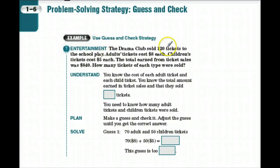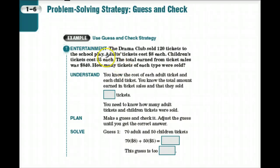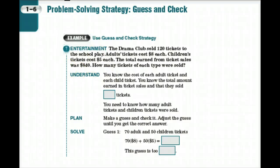The problem says to use the guess and check strategy. The drama club sold 120 tickets to the school play. Adult tickets cost $8 each, children's tickets cost $5 each, and the total earned from ticket sales was $840. We're trying to find out how many adult tickets and how many children's tickets were sold — $8, $5, and our total being $840.